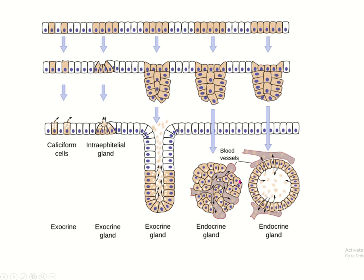When the gland loses connection from the covering epithelium, its secretion goes directly to blood vessels — this is the endocrine gland. The thyroid gland is a special type of endocrine gland where secretion is stored within follicles, and the hormone is then directly secreted into blood vessels.